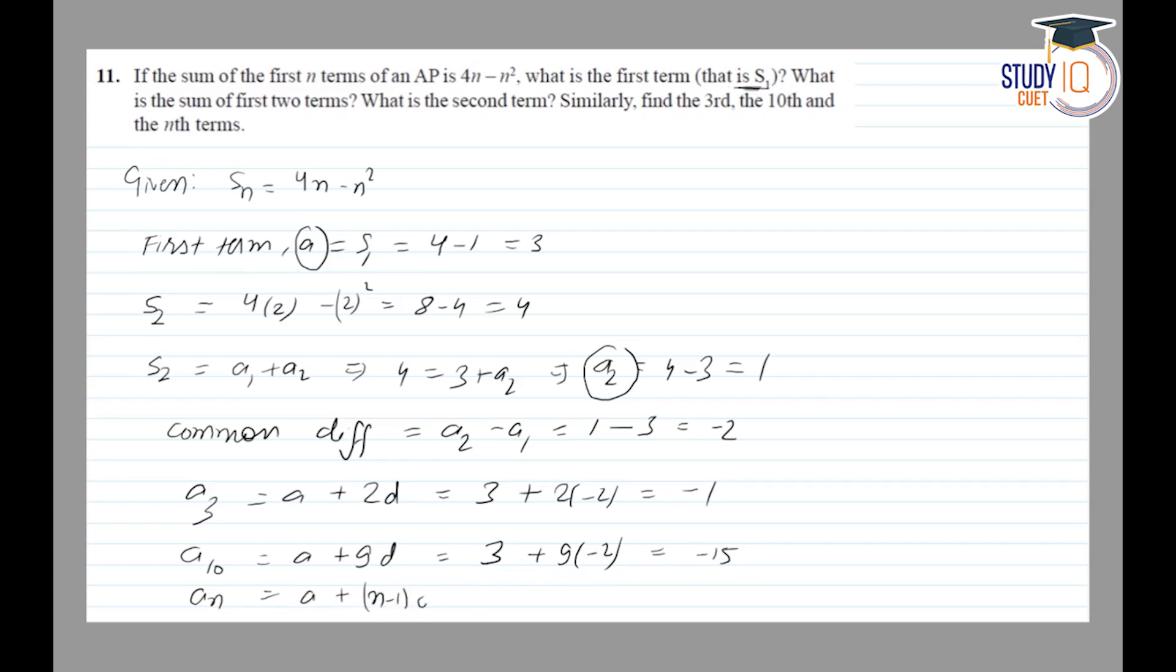an will be a plus n minus 1 into d. So this is 3 plus n minus 1 into d, where d value is minus 2.